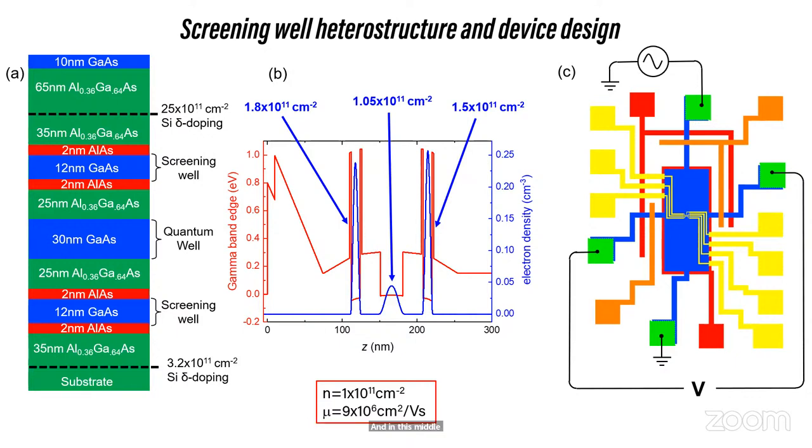And in this middle panel, I'm showing you the conduction band edge profile in the growth direction. That's as you go down into the semiconductor layer, that's the red line. And the blue lines correspond to the charge density. And what you see is there's actually three two-dimensional electron gases in parallel. The one I'm interested in probing is actually in the center, is actually the lowest density. I have two high density, and it's important that they are different densities, two 2DEGs on either side.